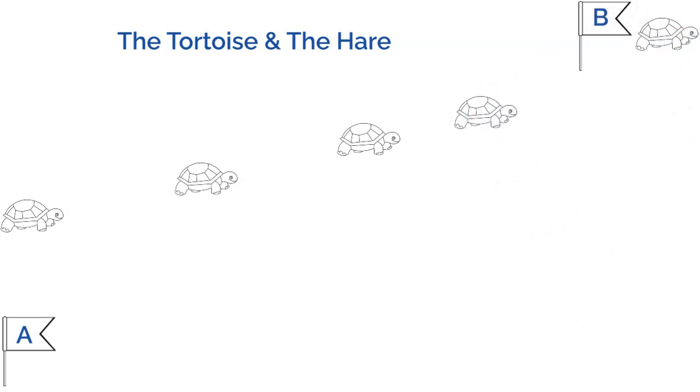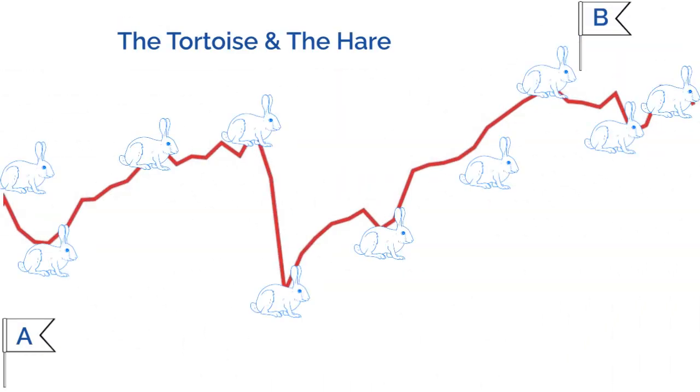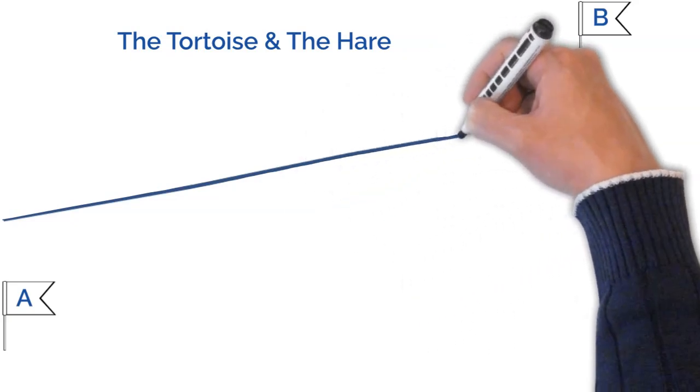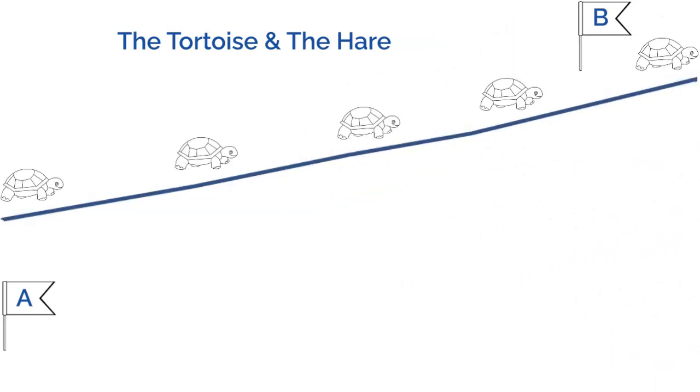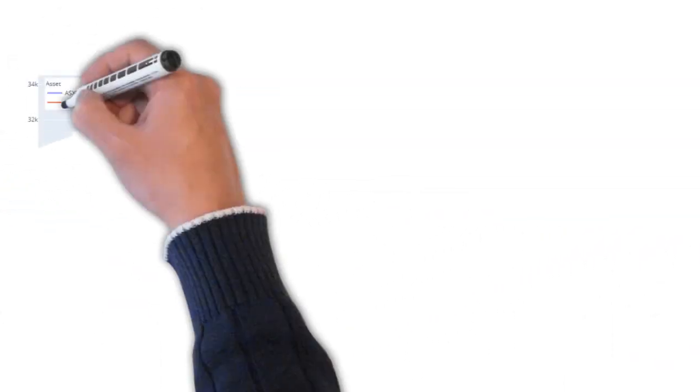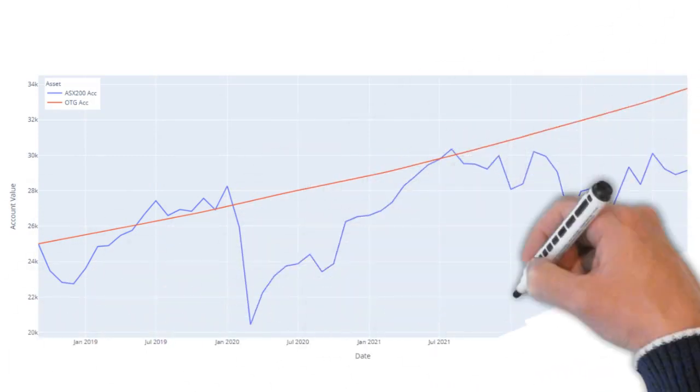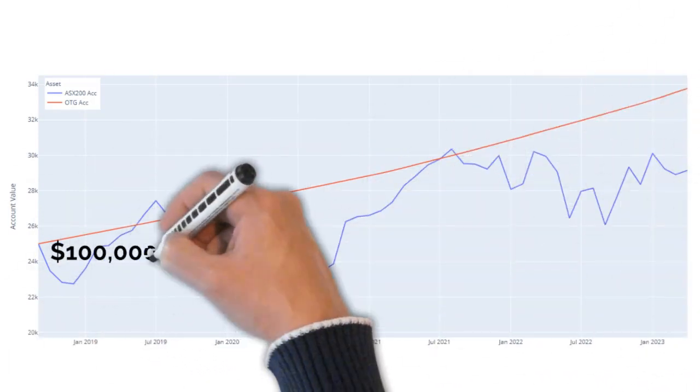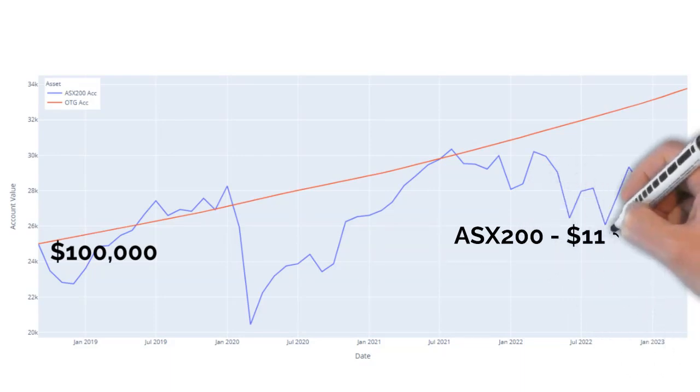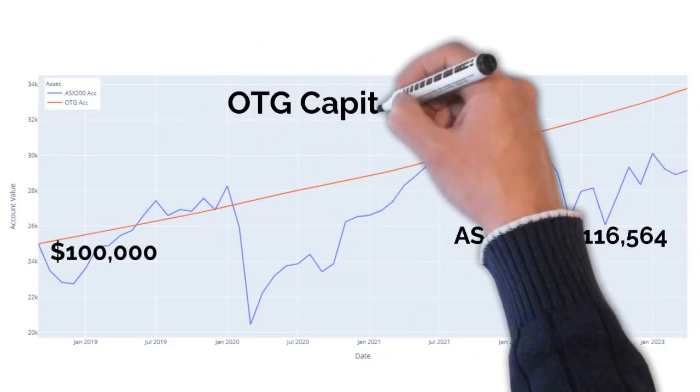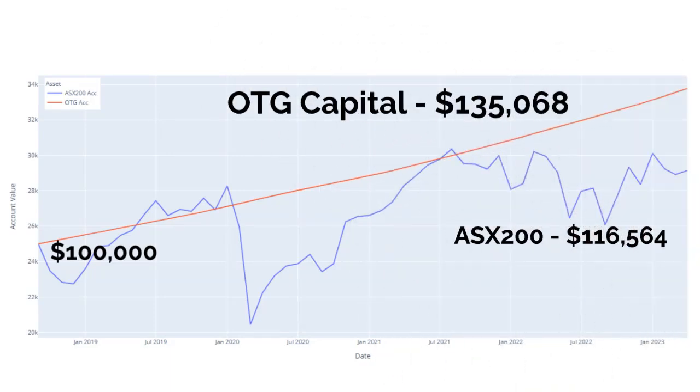This might surprise you, but the Hare's path is that which the ASX 200 has travelled in the past five years, and the tortoise is OTG Capital's path since inception, almost five years ago. The same $100,000 with the Hare would have you at $116,564, compared to OTG Capital's yield of $135,068.